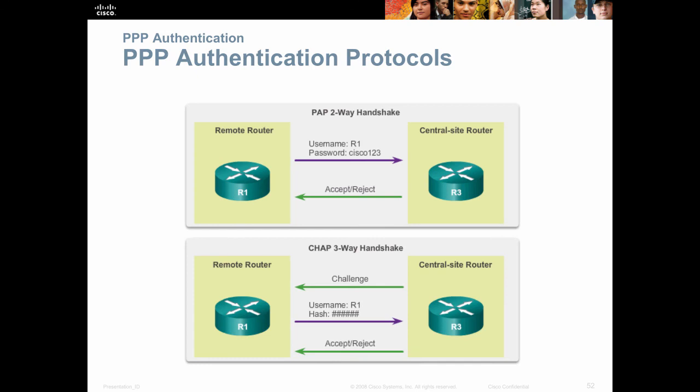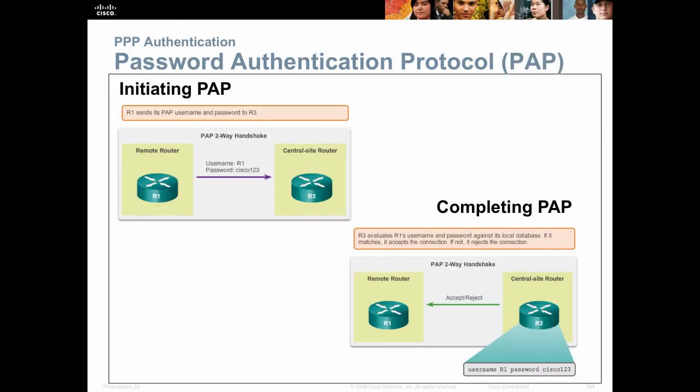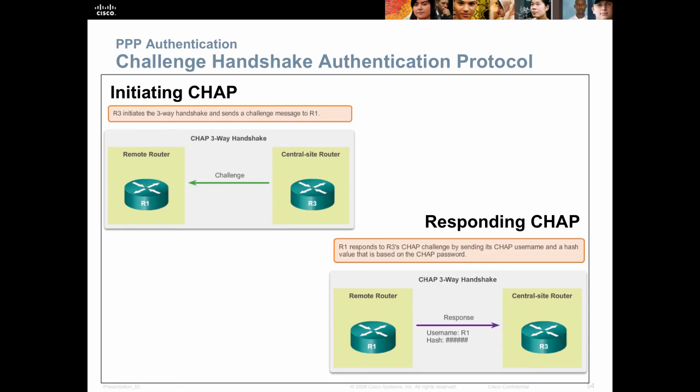Now we can talk about authentication. There are two choices: PAP — simple authentication, two-way handshake, sends the password as plain text — and CHAP, which has a more advanced three-way handshake and sends the password as an encrypted MD5 hash. You have a lab where you'll set both of these up. The setup is almost identical other than changing the word PAP to CHAP, but the functionality is very different, so be sure to read up on the difference between a two-way and a three-way handshake.